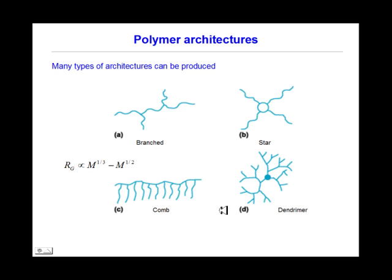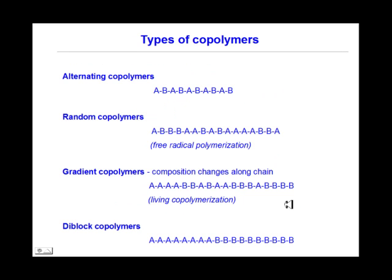All these allow different polymer architectures to be produced. We could have branched, star, comb, or dendrimer type polymers. There are also different types of co-polymers made depending on how the monomers get incorporated into the co-polymer chains — alternating co-polymers, random co-polymers, gradient co-polymers, or diblock co-polymers.